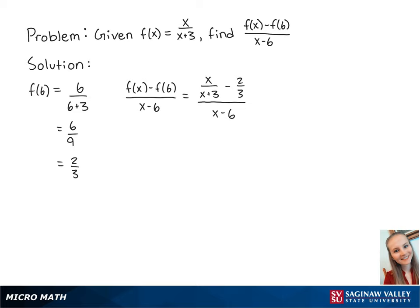We can simplify the top by using the common denominator of 3x plus 9. So now we have 3x minus 2x plus 6 over 3x plus 9 all over x minus 6.